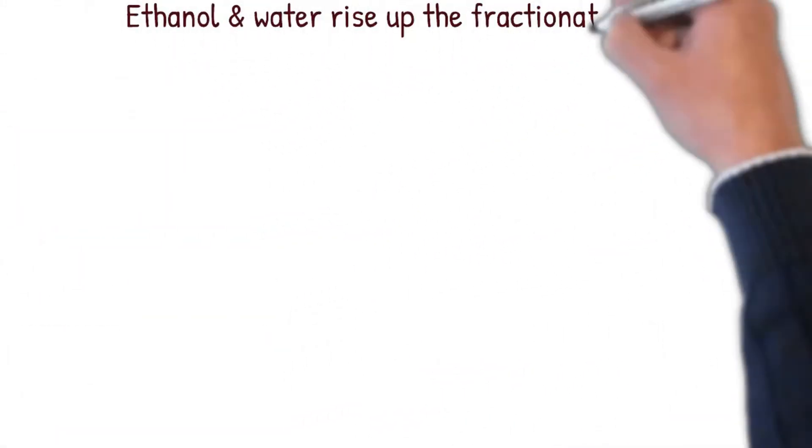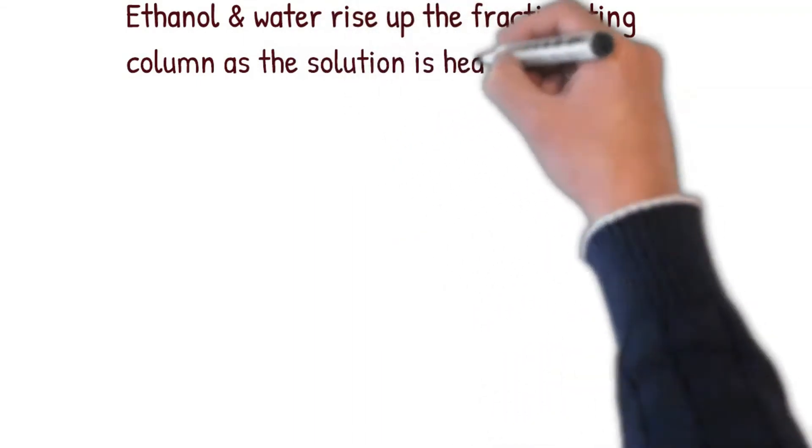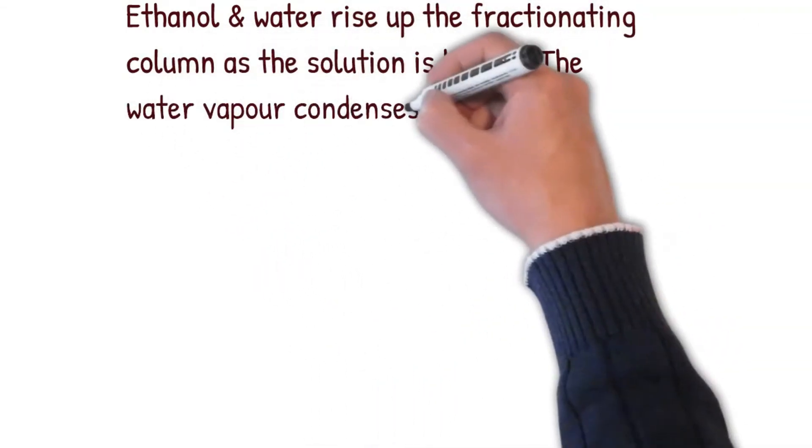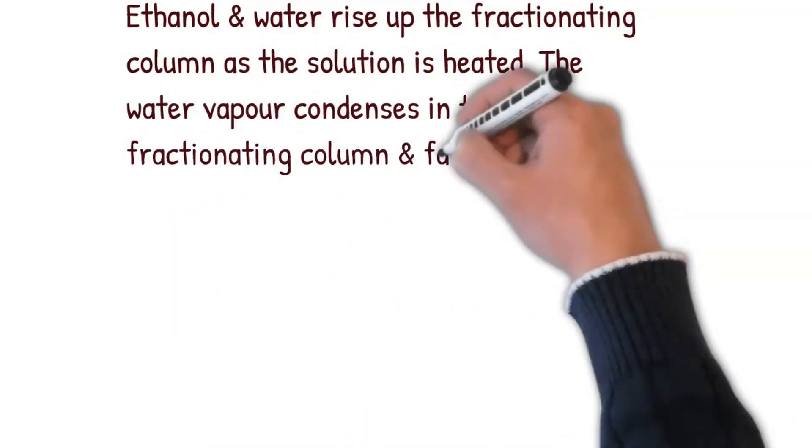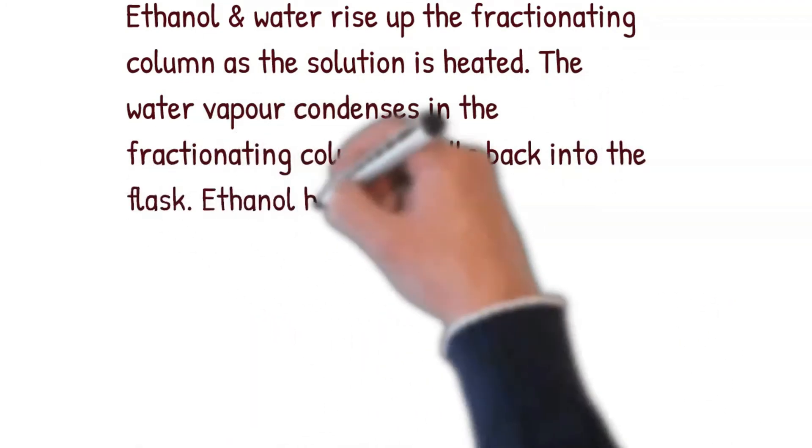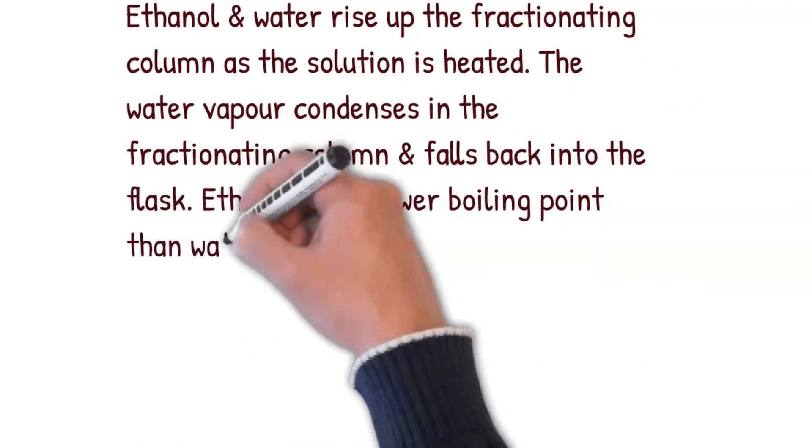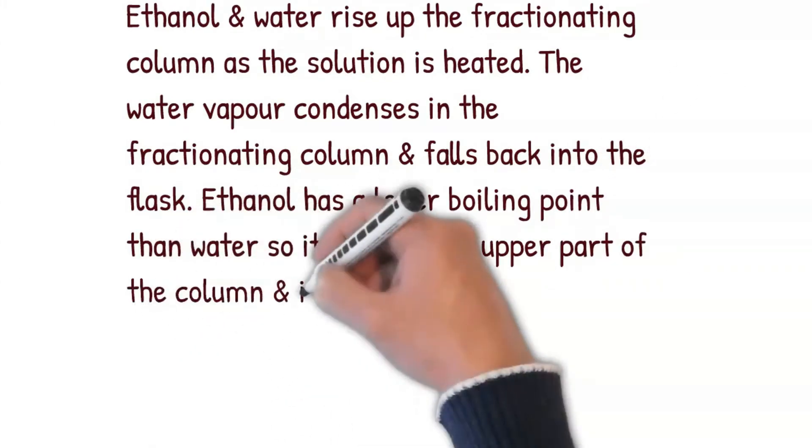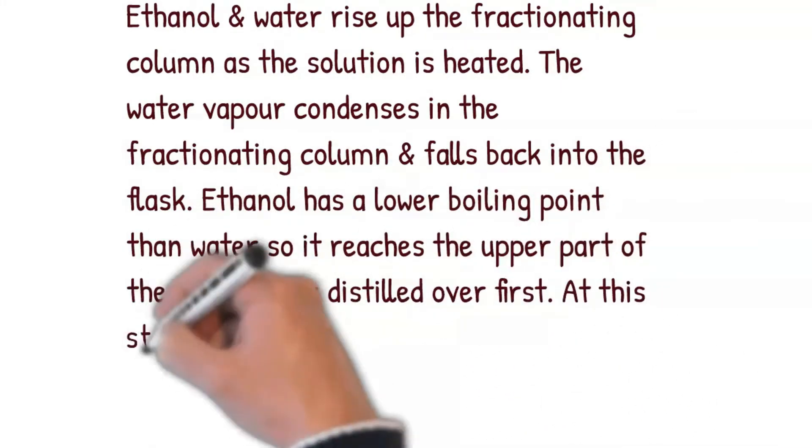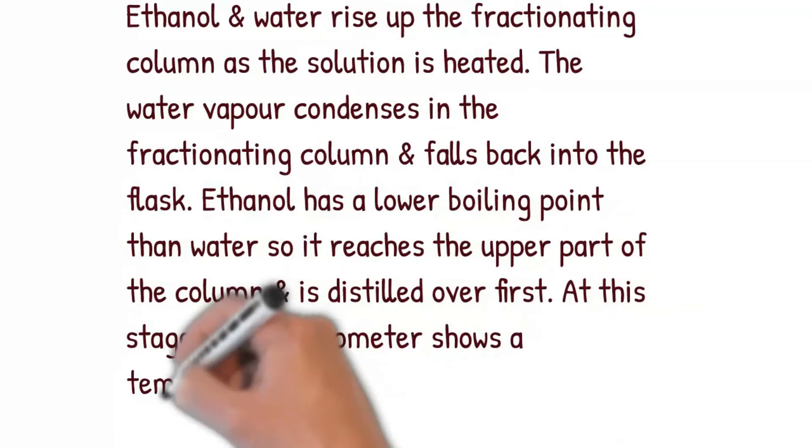Ethanol and water rise up the fractionating column as the solution is heated. The water vapor condenses in the fractionating column and falls back into the flask. Ethanol has a lower boiling point than water, so it reaches the upper part of the column and is distilled over first. At this stage, the thermometer shows the temperature of 78 degrees Celsius, which is the boiling point of ethanol.